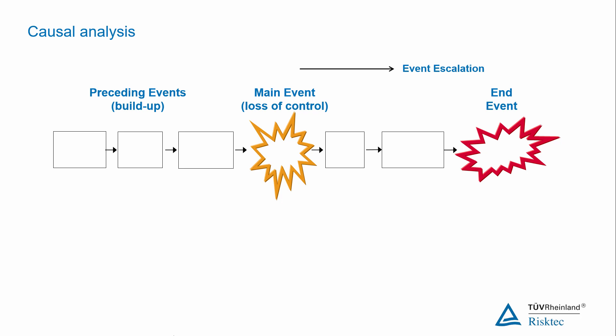For this example the scenario is a gas leak in a refinery that leads to an explosion. The main event is therefore the gas leak in the refinery which escalates to an explosion.